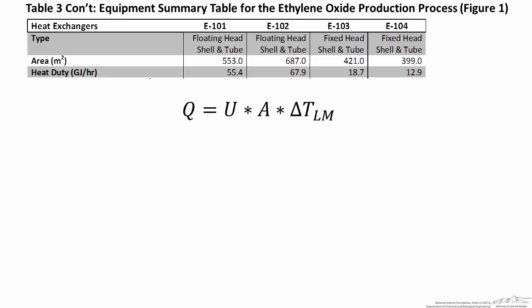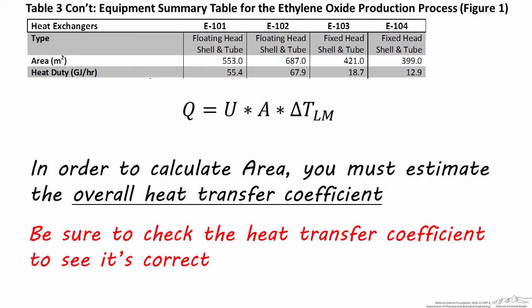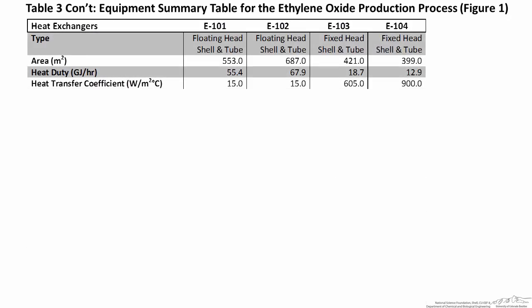Looking at this formula, keep in mind that to calculate area correctly, you must accurately estimate and input a heat transfer coefficient. If you find that when using ChemCAD or Aspen, area is provided for you, this is a sign that the heat transfer coefficient was estimated for you. Make sure to check this number to see that it's appropriate for your heat exchanger. It's best to try to calculate heat transfer coefficients by hand, taking into account the phase of each stream and the materials of construction for your heat exchanger. For our ethylene oxide process, I chose heat transfer coefficients appropriate for the tube material and the two streams exchanging heat.